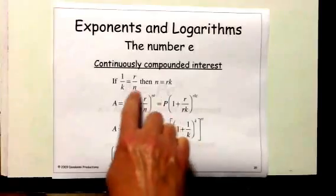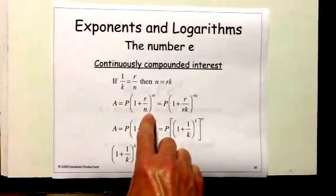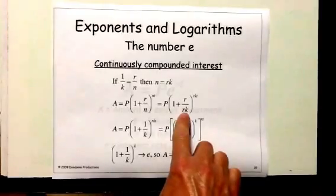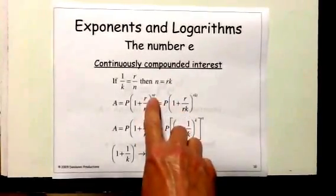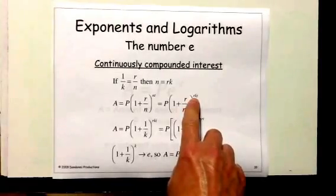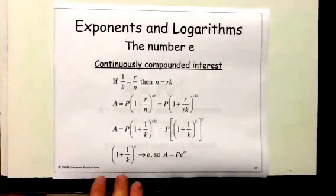Let's start with our compound interest formula—it should be familiar. We decided that if N is equal to RK, then I could write, instead of N here, I could write RK. And instead of N here, I could write RK.